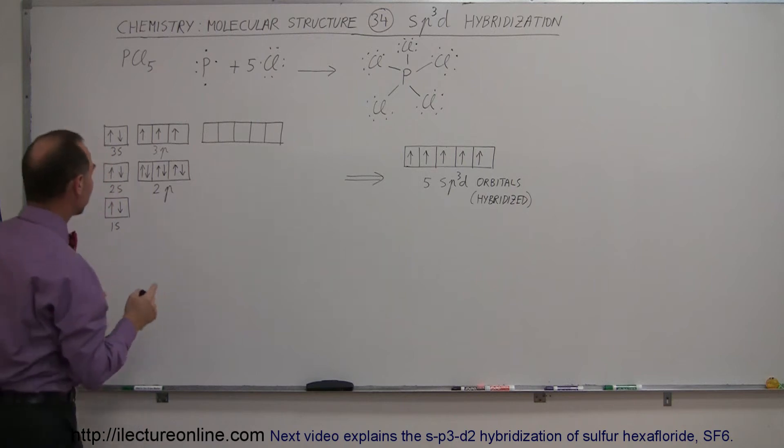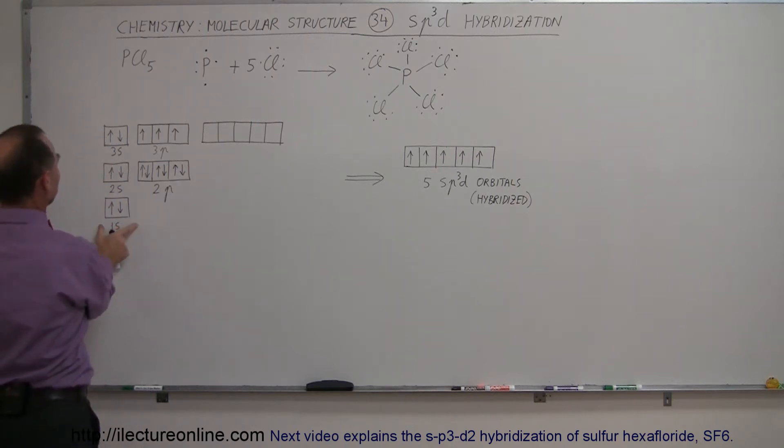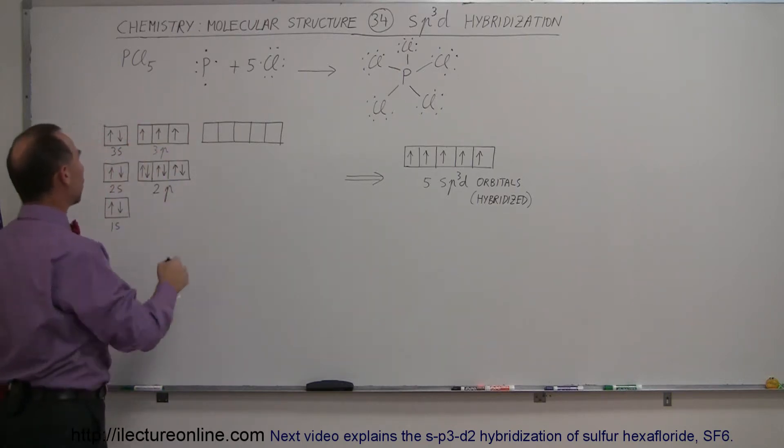Now, if we look at the electron structure for phosphorus, notice that the 1s orbitals are filled, the 2s orbital, the 2p orbitals are filled, the 3s and the 3p orbitals have one electron in each.